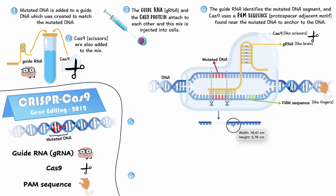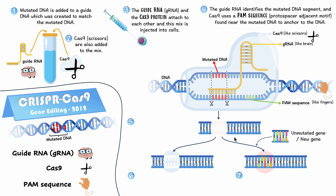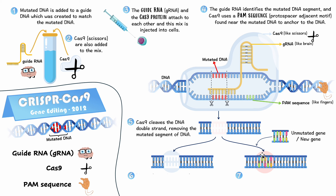Once we cut out that specific piece, one of two things can happen. We can leave it and the DNA will adhere together — now there's just a missing gene, which is one option. If the gene was bad, now it's not there. Or we can replace it with a new segment, an unmutated gene. If we just remove it, we're still missing a gene and still not making a protein. The best thing is to replace that mutated gene with the unmutated one so you can have normal function again and make that protein like normal.